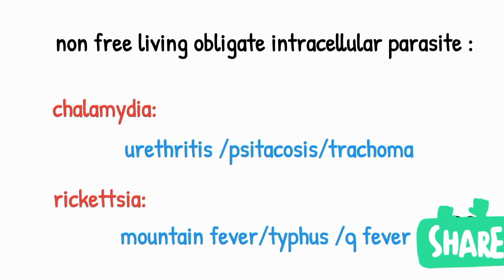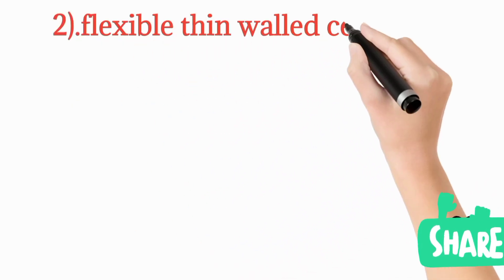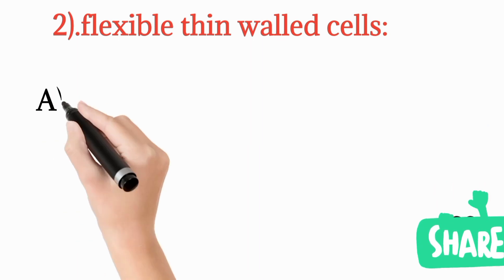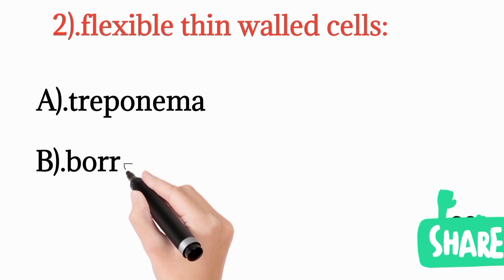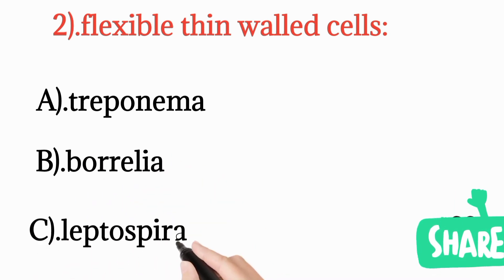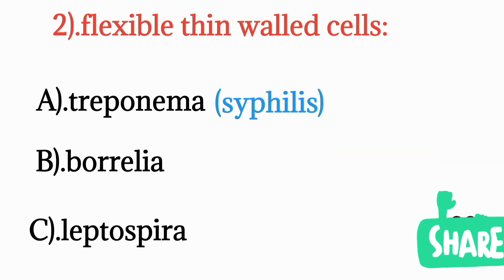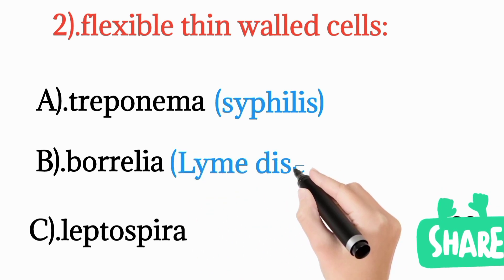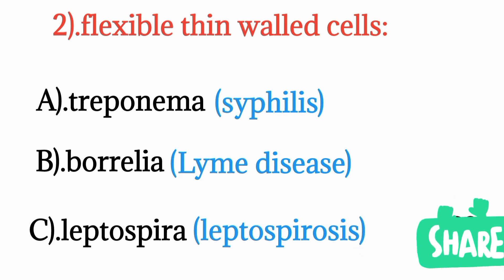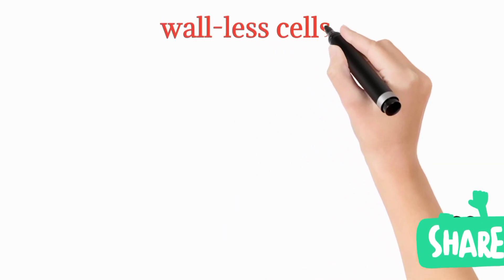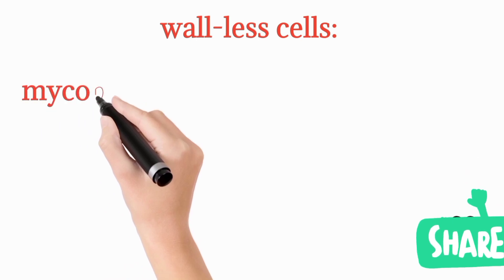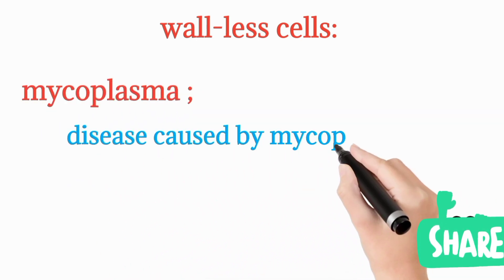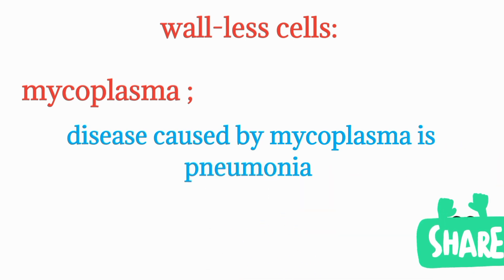Flexible thin cell wall bacteria, also known as spirochetes, include Treponema species, Borrelia, and Leptospira. Treponema pallidum causes syphilis, Borrelia causes Lyme disease, and Leptospira causes leptospirosis. Finally, wall-less bacteria — those without a cell wall — are best exemplified by Mycoplasma species, which causes pneumonia affecting the lungs.